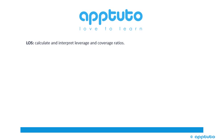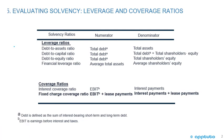This LOS is to calculate and interpret leverage and coverage ratios — evaluating solvency, leverage, and coverage ratios. Here we have the solvency ratios, with leverage at the top and our coverage ratios below.